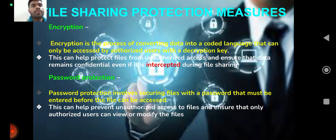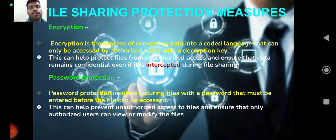File sharing protection measures are used to address the challenges discussed. The first measure is encryption. Encryption is the process of converting data into coded language — normal text is converted into cipher text. Cipher text is encrypted data not in its original form. If intercepted by an unauthorized person, they cannot decode it because it is in encrypted form. So encryption is one of the best methods to use when sharing a file.